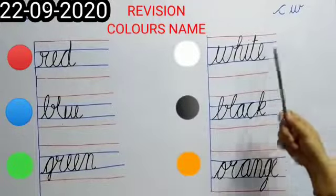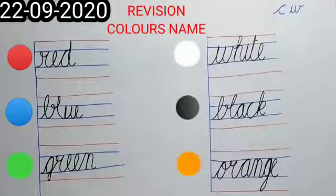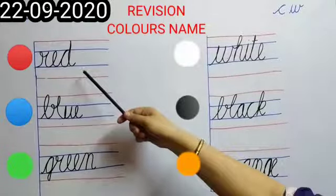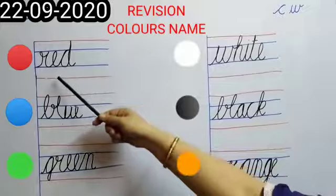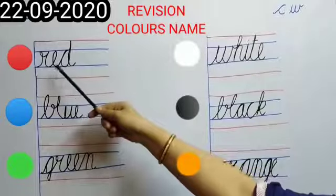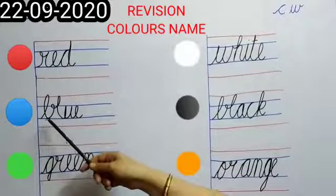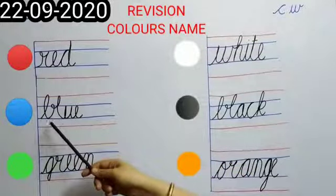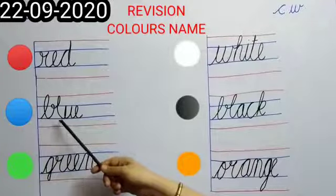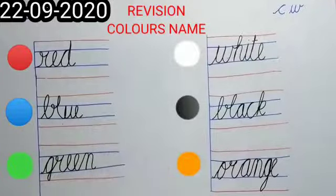Look at the first picture. Which color is this? This is red color. All of you write down R-E-D, red. Number two, which color is this? This is blue color, B-L-U-E, blue.